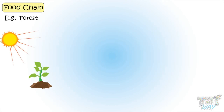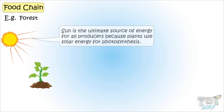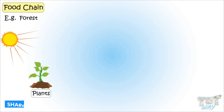Energy comes from the sun, as the sun is the ultimate source of energy, because plants use solar energy for photosynthesis. So plants produce food.